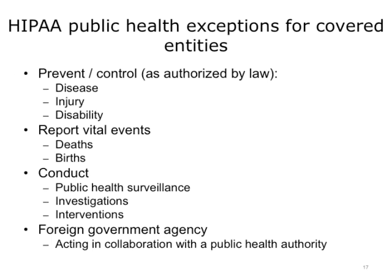The exceptions HIPAA provides to covered entities to disclose PHI to public health agencies include the prevention and control of diseases, injuries, or disabilities. However, the covered entity must ensure that the agency is authorized by federal, state, or local law to collect the information. The covered entity may also report vital events such as deaths and births to a public health agency authorized to receive such information. They may disclose PHI to public health agencies authorized to conduct public health surveillance, epidemiological investigations, and interventions. Finally, the covered entity can disclose PHI to a foreign government agency that is acting in collaboration with a public health authority, as may be the case in an outbreak of a contagious disease.